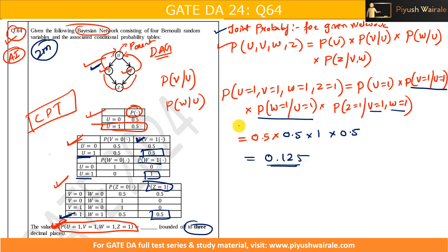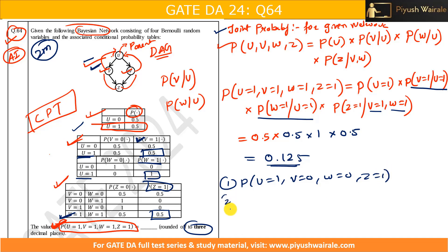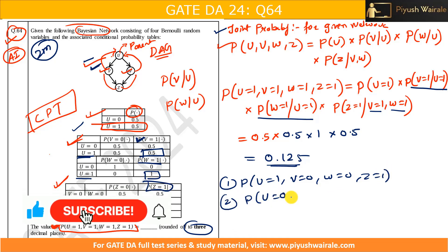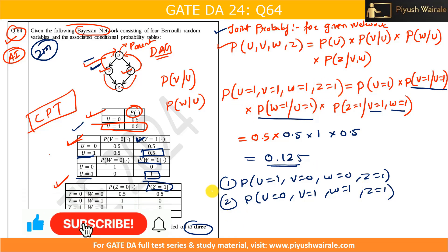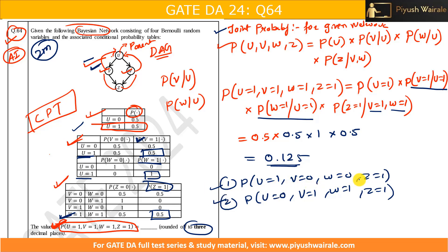Based on this same diagram and CPT, they can ask a number of different questions. Here we found the probability for U=1, V=1, W=1, Z=1. What if they ask for U=1, V=0, W=0, Z=1? Different combinations are possible — they can change the values of U, V, W, Z and you will get different answers. You just need to use the given values and apply the formula.